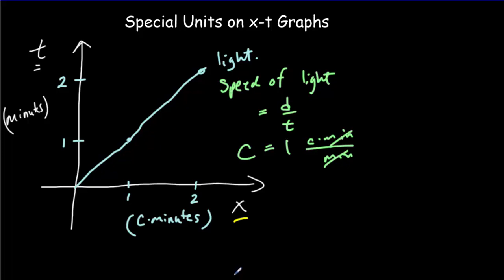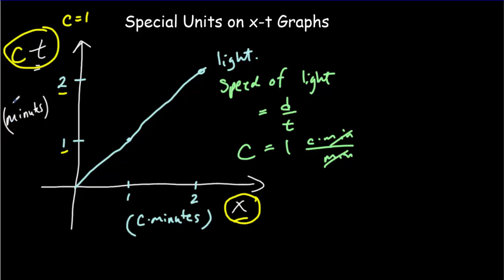We make one more subtle change. Since there is total symmetry between the variable ct and x, we relabel the time axis as c times t. This doesn't change the numbers because c equals one, but it does change our units to c·minutes on both axes, giving the same units for time and space. If space and time are entangled and symmetrical, they should have the same units — and that is reflected here. This is typically what's done in what's called a spacetime diagram.